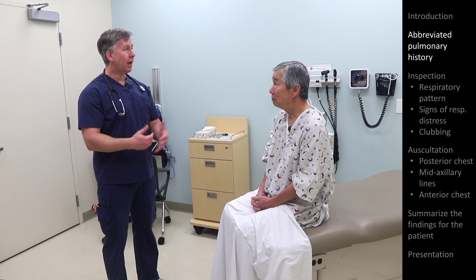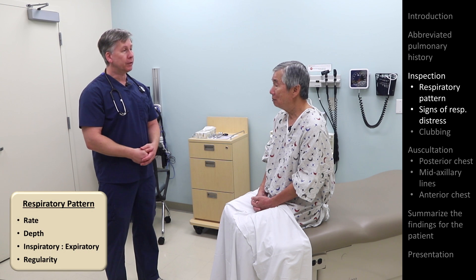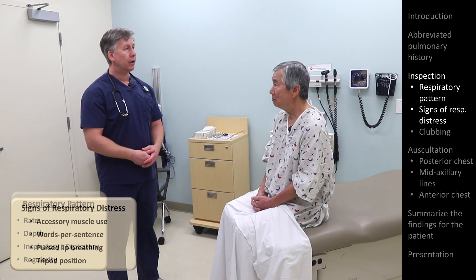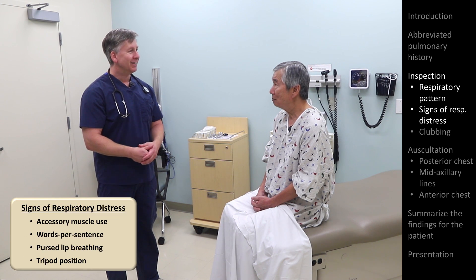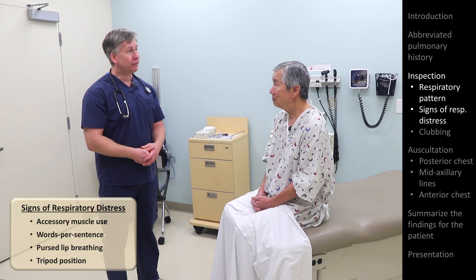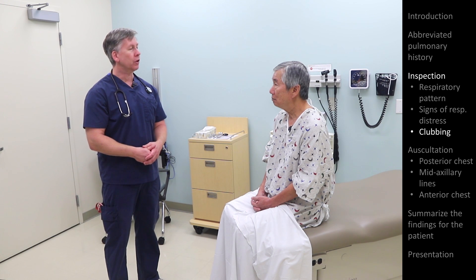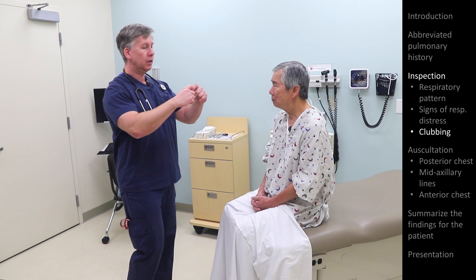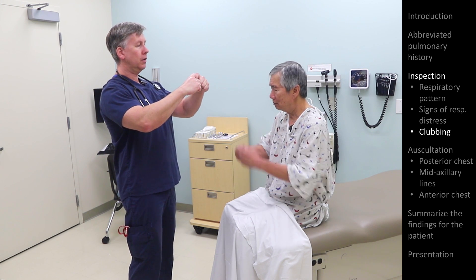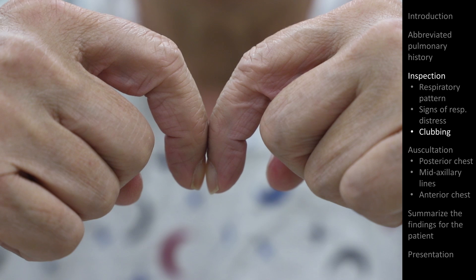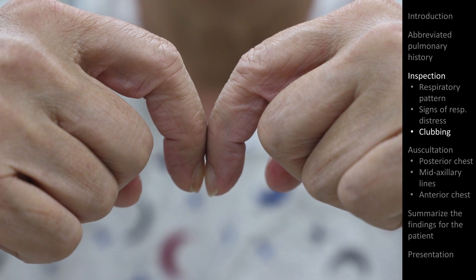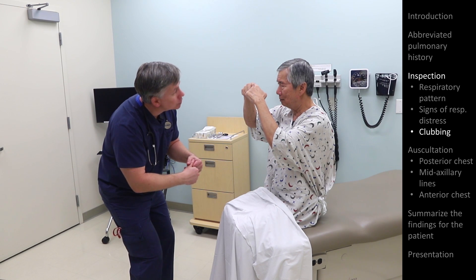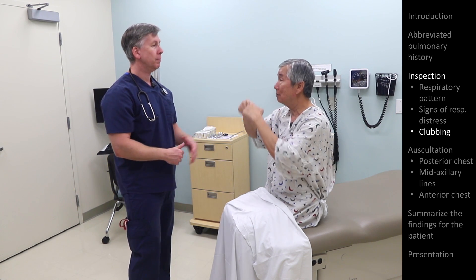As we've been talking, I have been observing your respiratory pattern, and it seems like your breathing is nice and regular with a regular rate and regular depth, which is obviously normal. Next, I'm going to take a look at your fingers — we can tell a little bit about the lungs sometimes by looking at the fingers. I'm going to ask you to hold up your two index fingers like this. What we're looking for is a little diamond-shaped opening between the two nails. I can see that in your case, which is normal — so that's good to see.